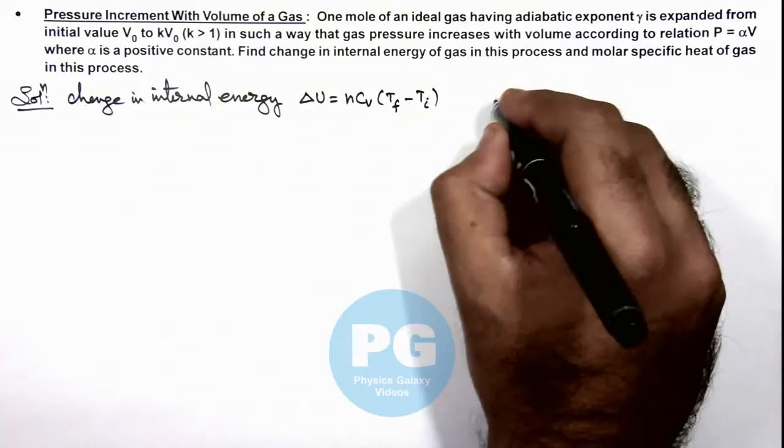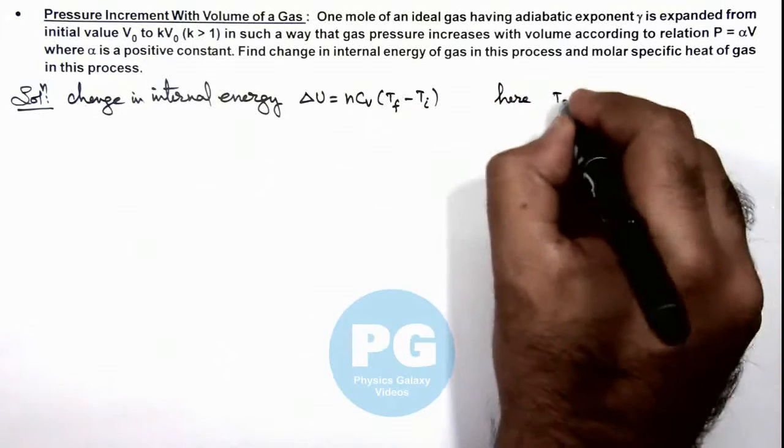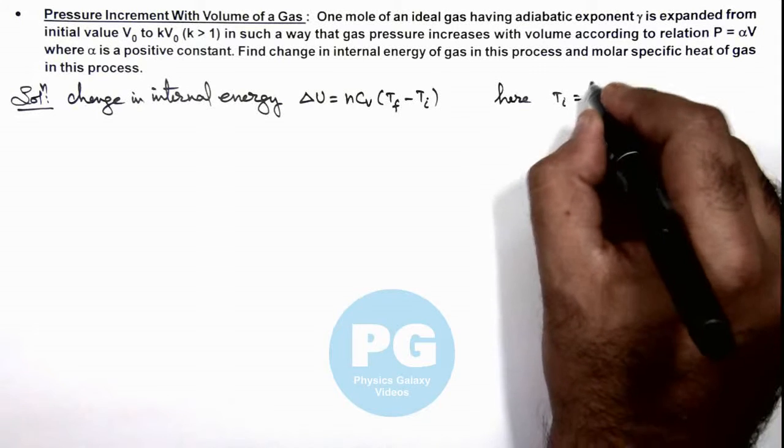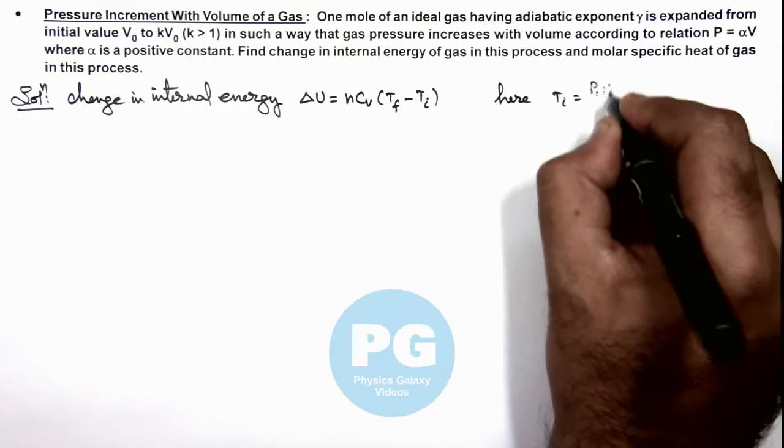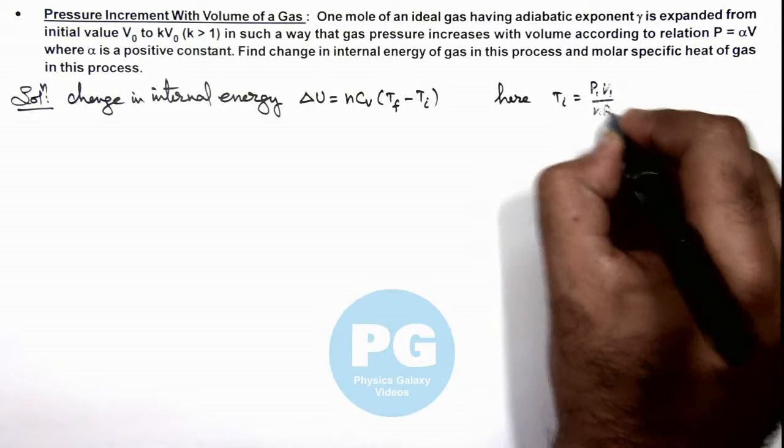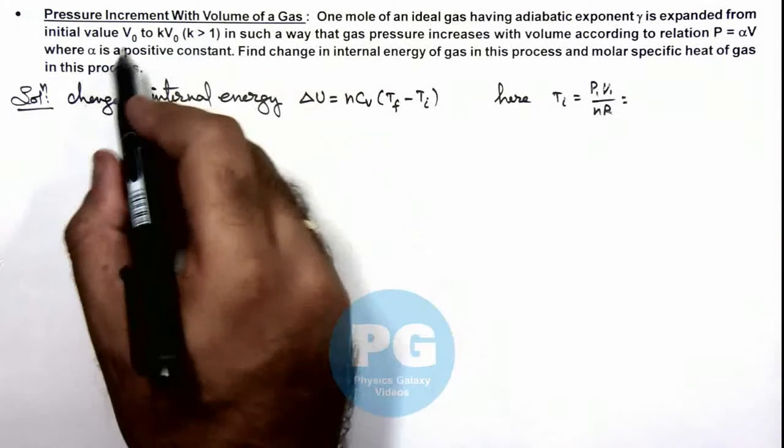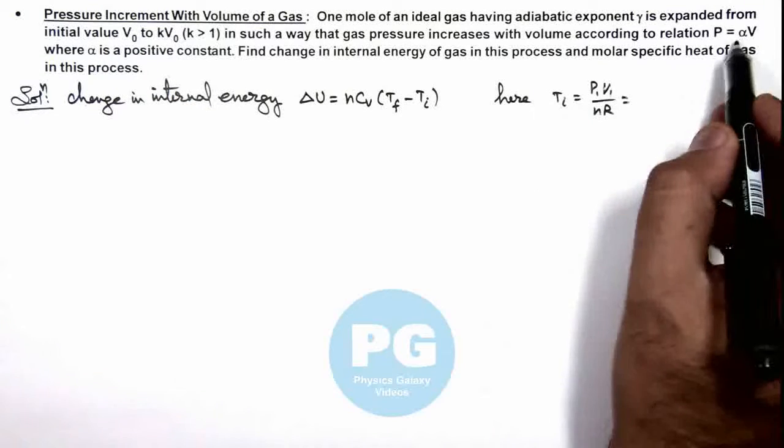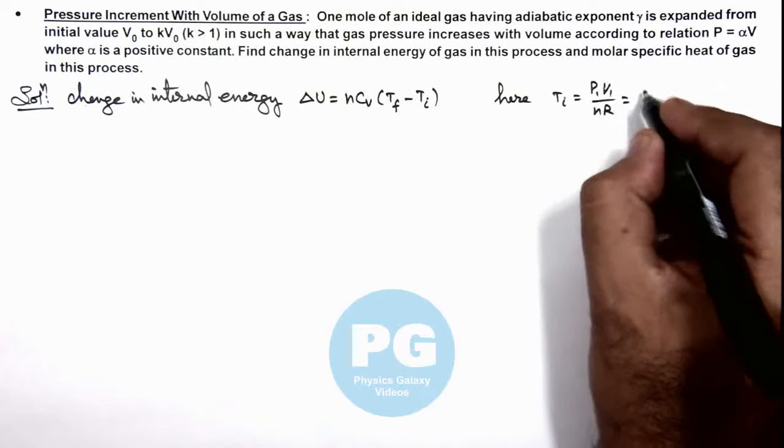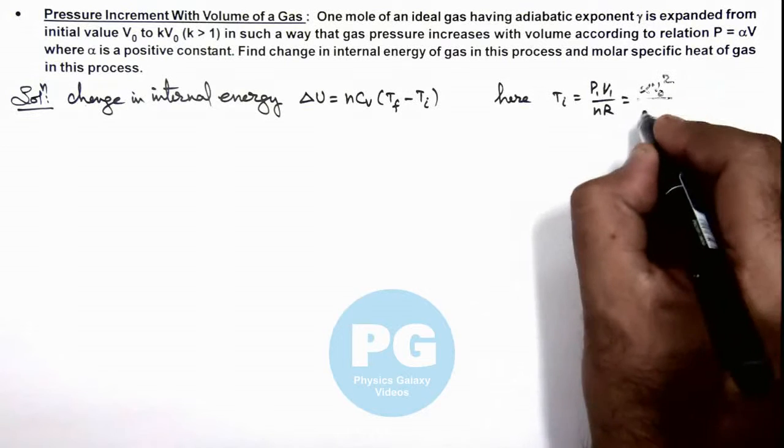And here we can write the initial temperature is equal to, in initial state we can write P₁V₁ by nR. So as initial volume is V₀, pressure will be αV₀, so this initial temperature can be written as αV₀² by nR.